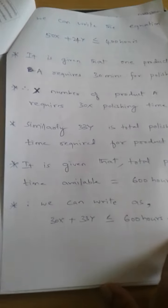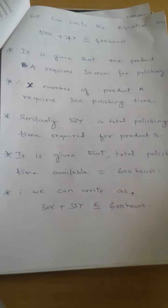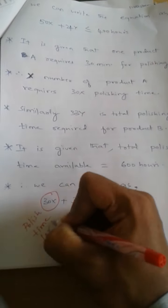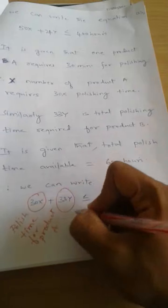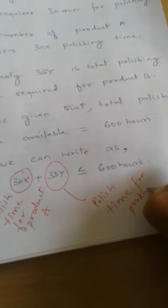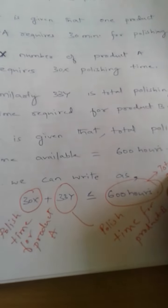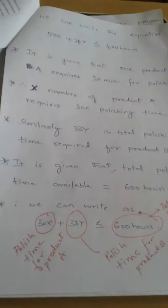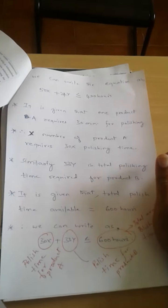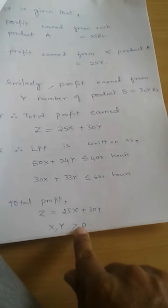The complete explanation is written out for you to go through. This covers the polishing time for product A, polishing time for product B, and the total available polishing time — forming the second equation. Additionally, a manufacturing unit can manufacture some units of product A and B, or zero, but it cannot be negative. Therefore, X, Y ≥ 0.